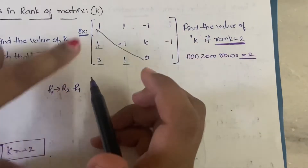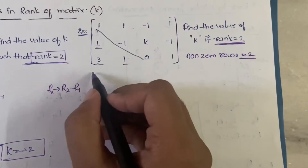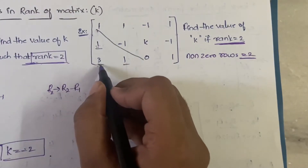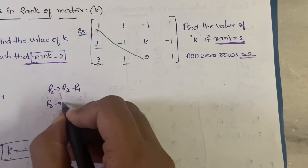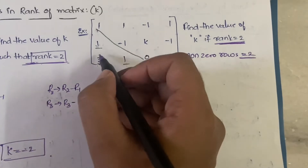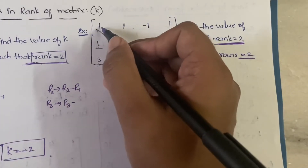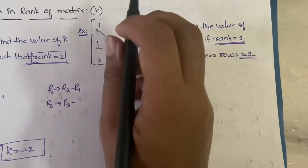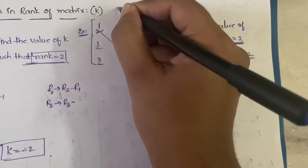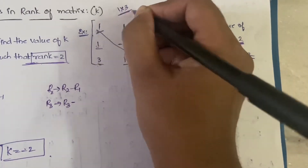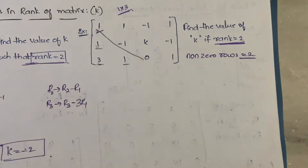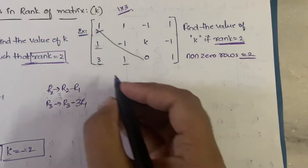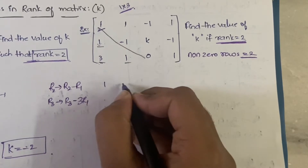So R2 minus R1 gives zero. Next, to make the element in R3 zero, we do R3 = R3 - 3R1. Three minus three gives zero. To get 3 using 1, we multiply 1 by 3, so we use 3R1. Let's see what we get — the first row stays as it is.